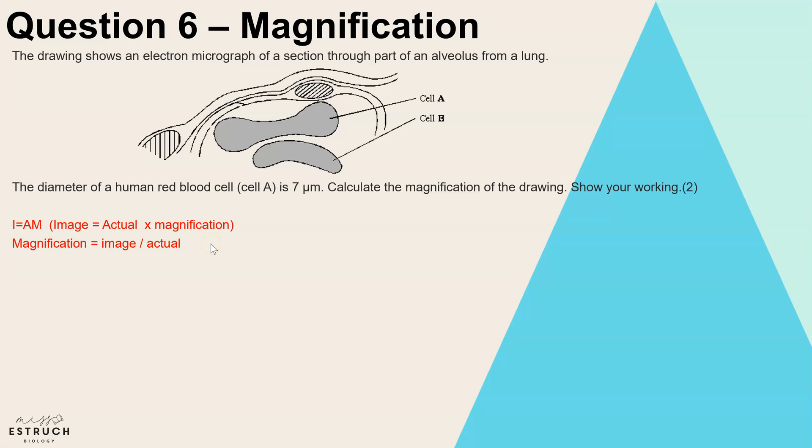Now if you have actually downloaded these questions from MissEstruch.com, you might have printed these off at different scales, so you might print it off slightly shrunken down. When I measured this, it came to 63 millimeters, but you may have got a slightly different value for that. So we've now got 63 millimeters and our actual is seven micrometers.